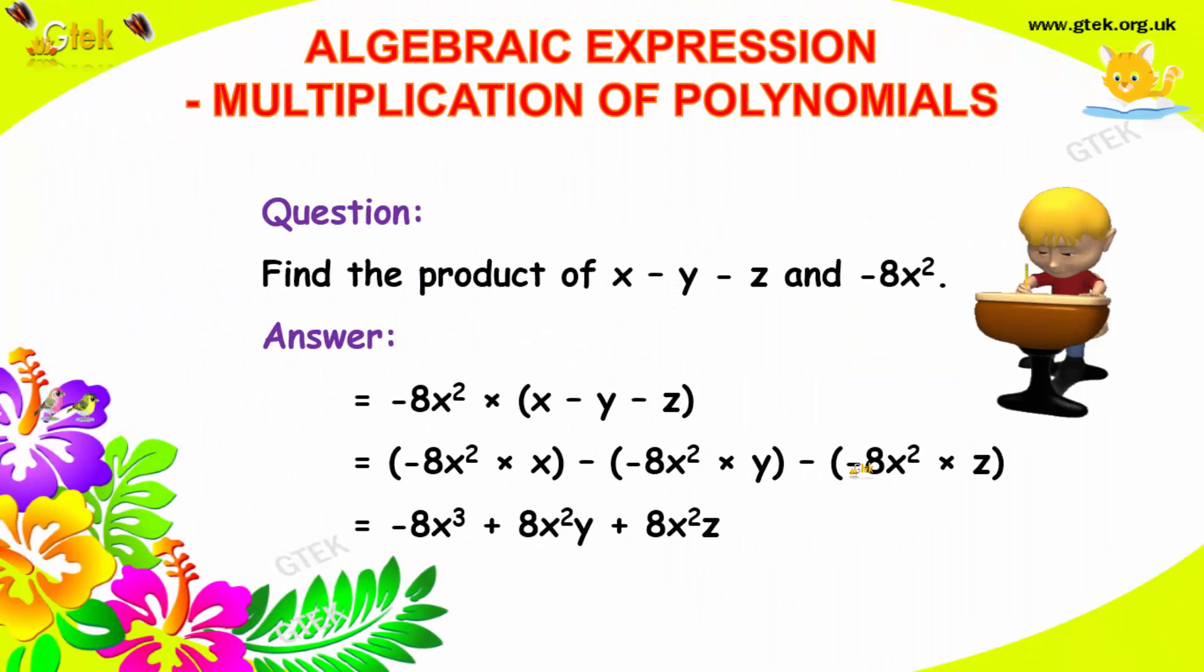Now, we will go with another problem. It's x - y - z and minus 8x². The answer is, so as I told, you need to multiply this minus 8x² into x, form your term. Minus 8x² into y, form your term, minus 8x² into minus z, form your term.